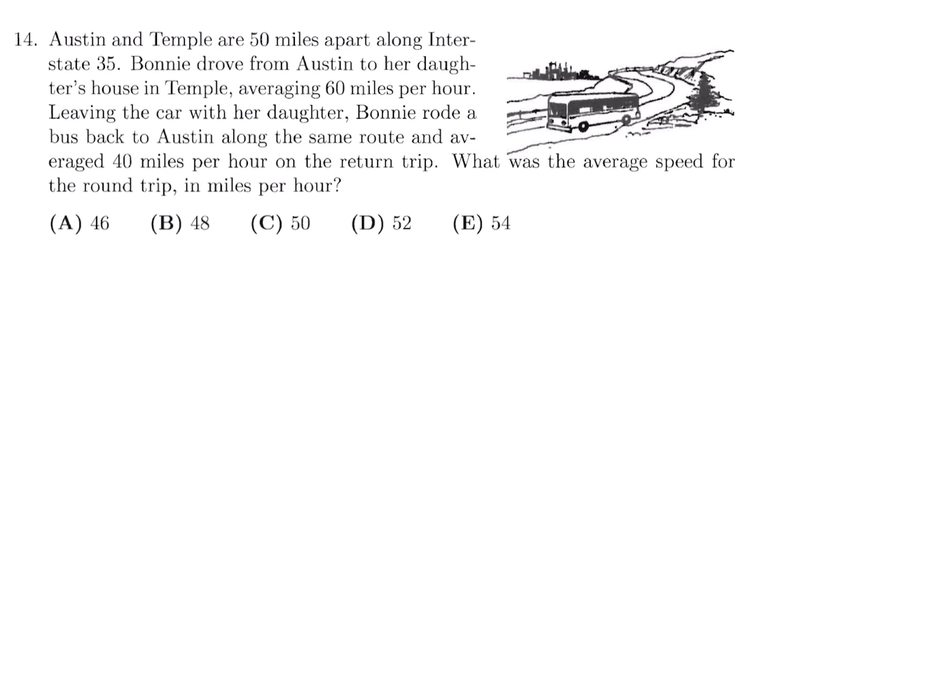Austin and Temple are 50 miles apart along the Interstate 35. Bonnie drove from Austin to her daughter's house in Temple, averaging 60 miles per hour. Leaving the car with her daughter, Bonnie rode a bus back to Austin along the same route and averaged 40 miles per hour on the return trip. What was the average speed for the round trip in miles per hour? So here's Austin and here's Temple. And there's 50 miles separating.